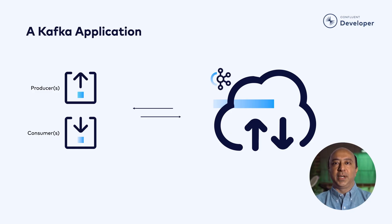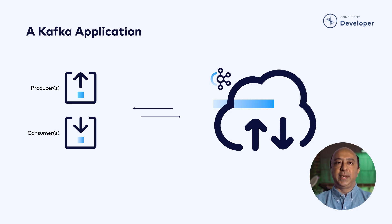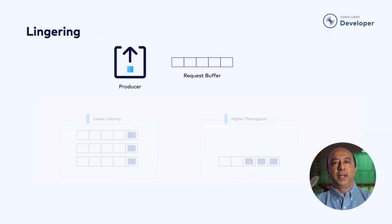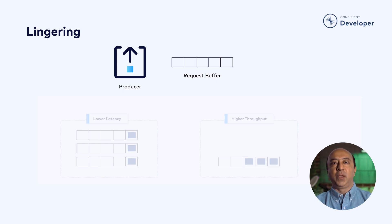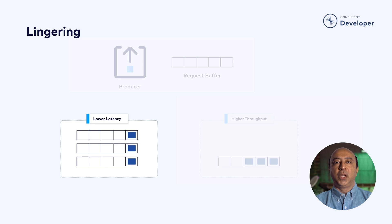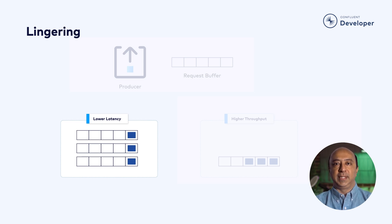To briefly touch on what linger.ms is, let's take a look at your average Kafka application. We have producers sending messages to the cluster, and consumers getting messages back. From the producer's perspective, whenever the client code invokes a send, the producer puts it into a queue to be sent out. Once there, there are usually two choices. We could choose to send each message as it arrives and get the lowest possible latency — one message per request.